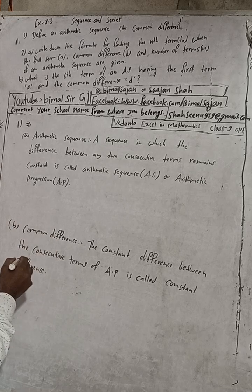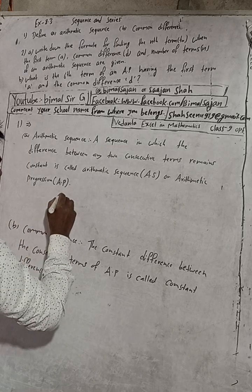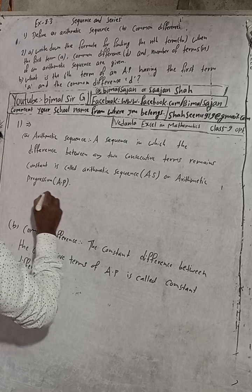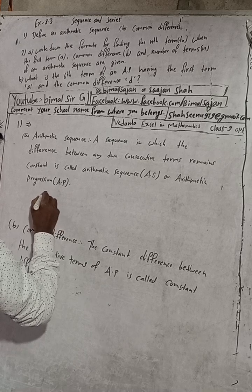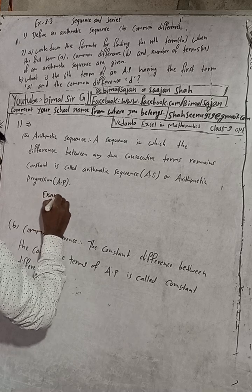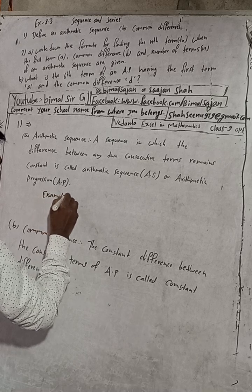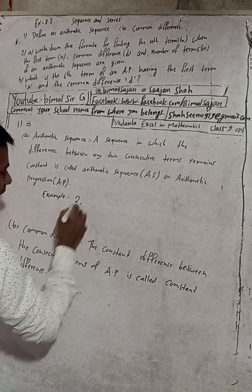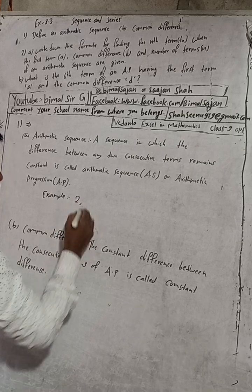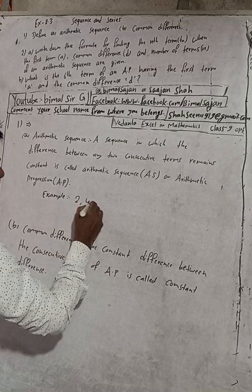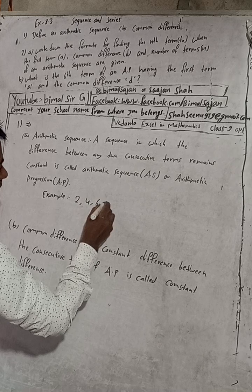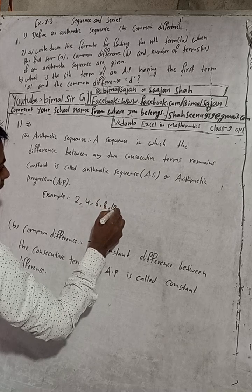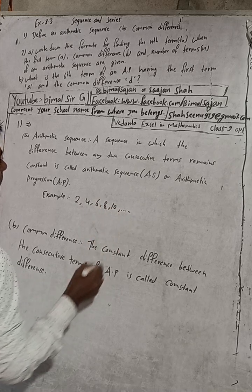If you want to understand with an example, suppose I write here: 2, 4, 6, 8, 10 and so on.